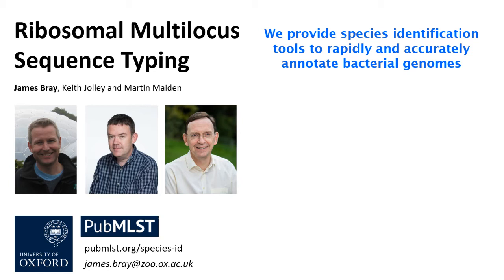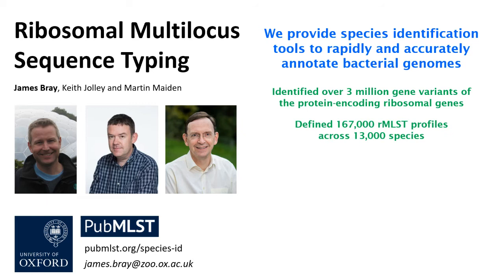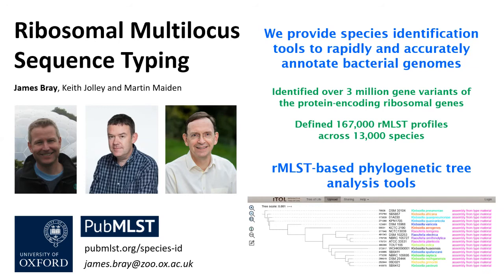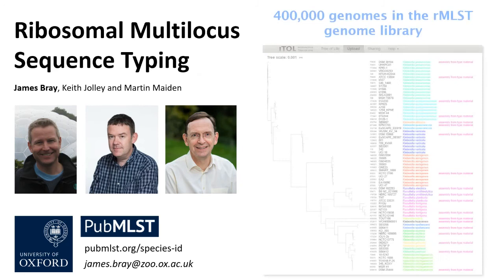We've identified over 3 million gene variants of the protein-encoding ribosomal genes, and used these to define thousands of species-specific RMLST profiles across the bacterial domain. These gene variants can be used to perform rapid and accurate phylogenetic tree analyses to explore species-level taxonomic relationships for any subset of entries from our extensive genome database.